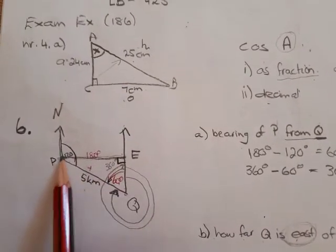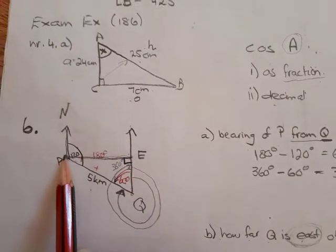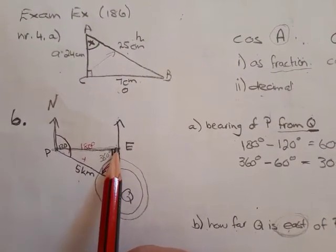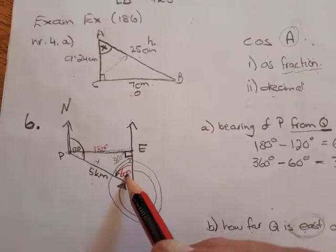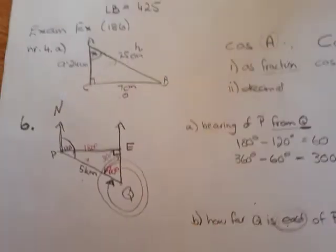Meaning you can now work with this bottom right angle triangle. You also got this angle already. You have worked that out. So that one is 60 degrees.